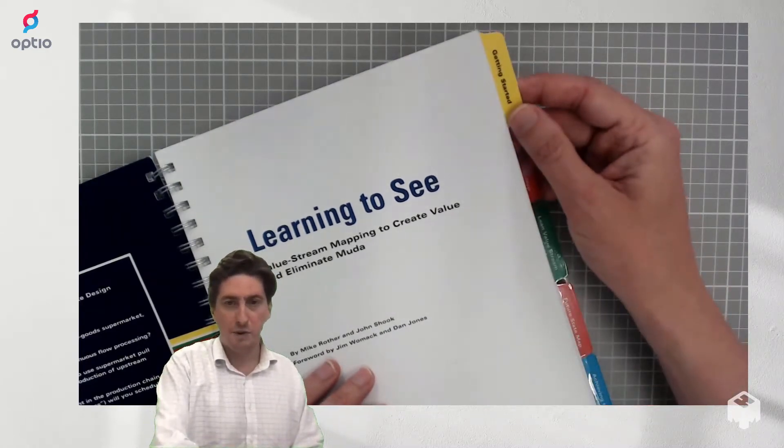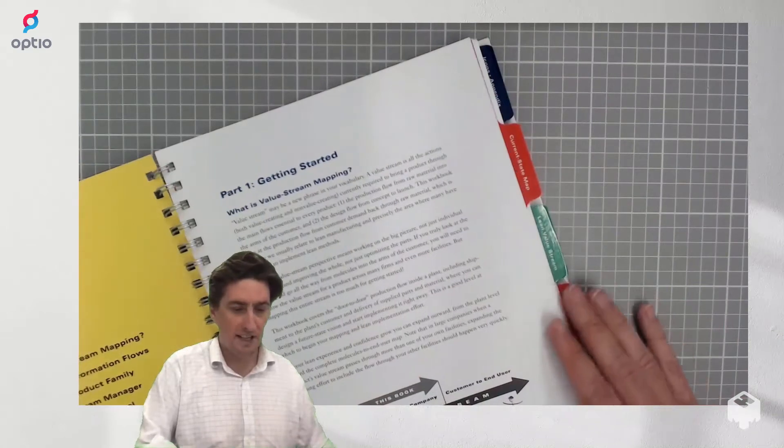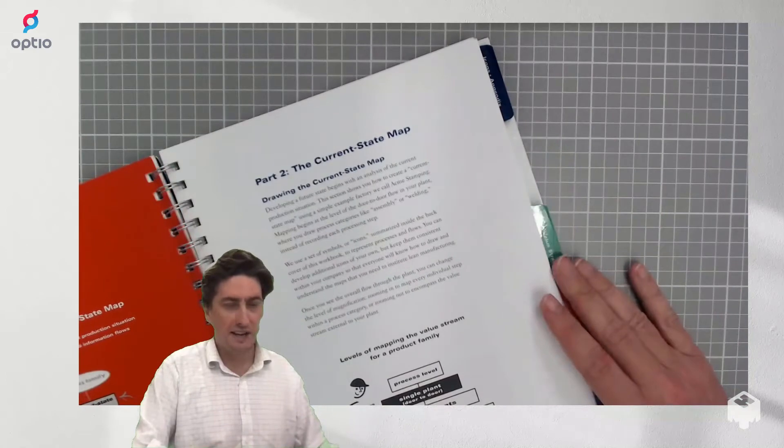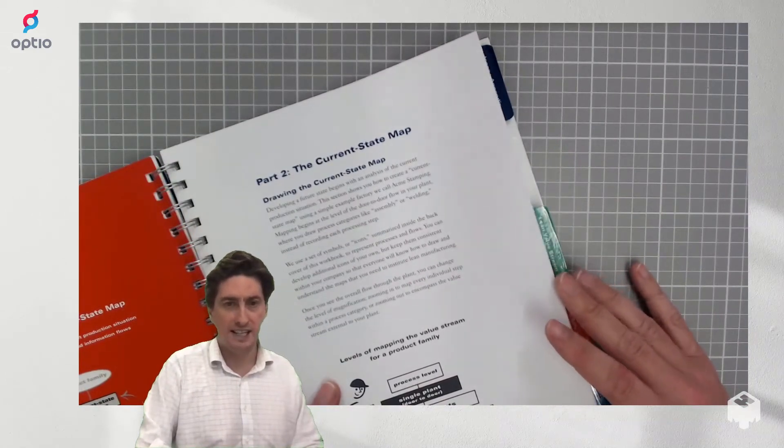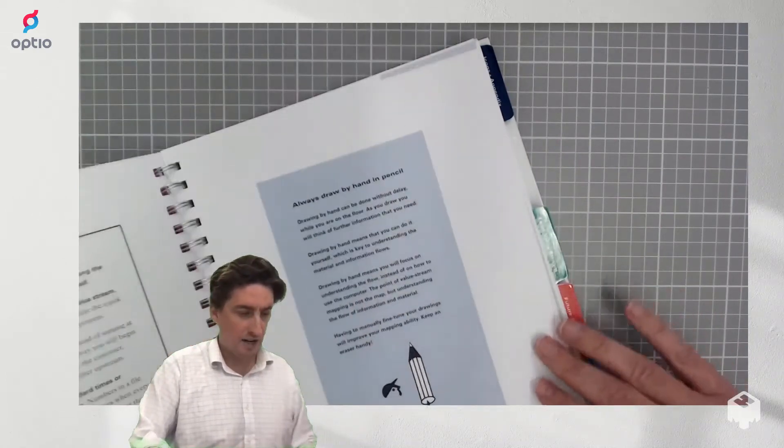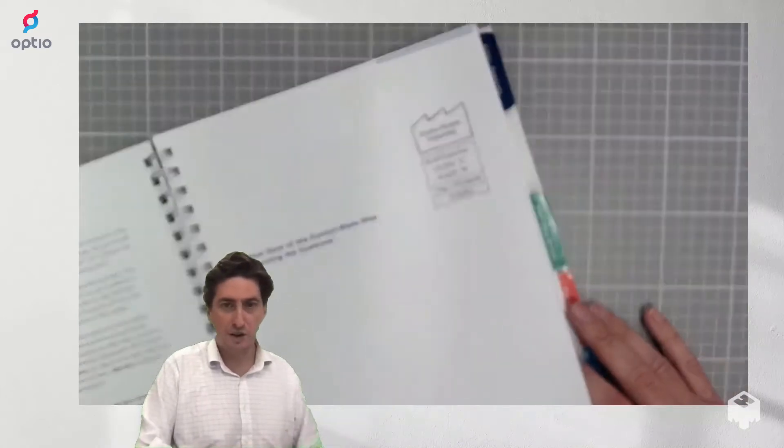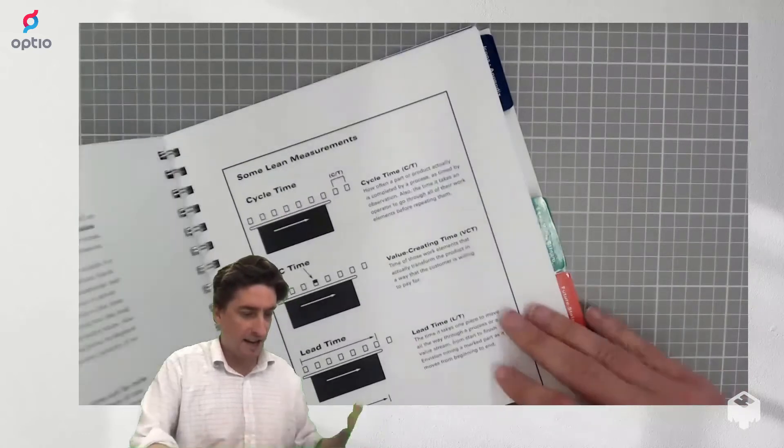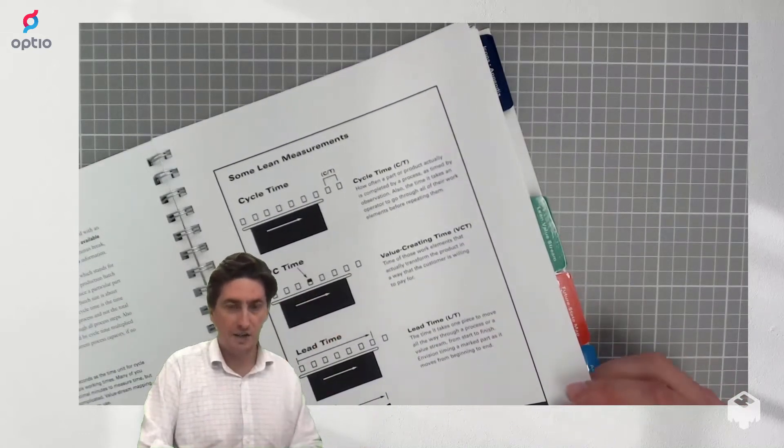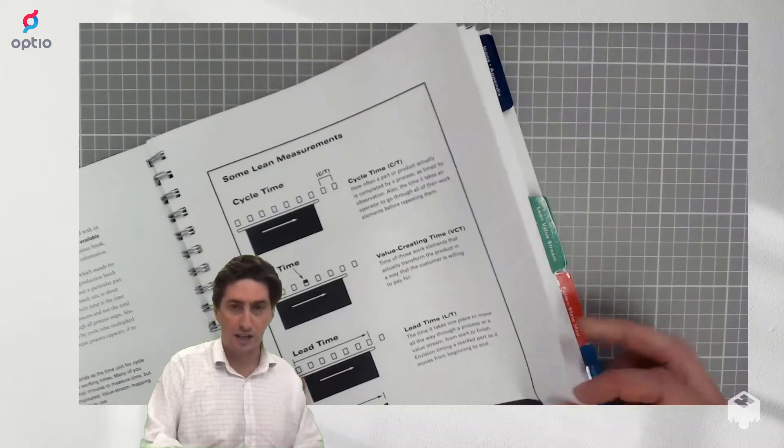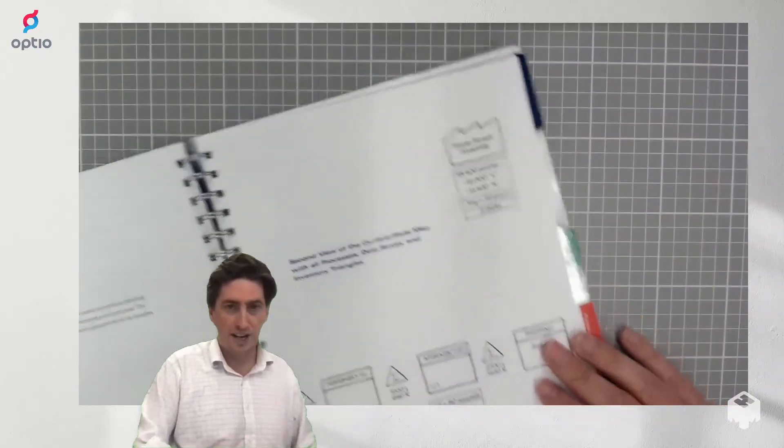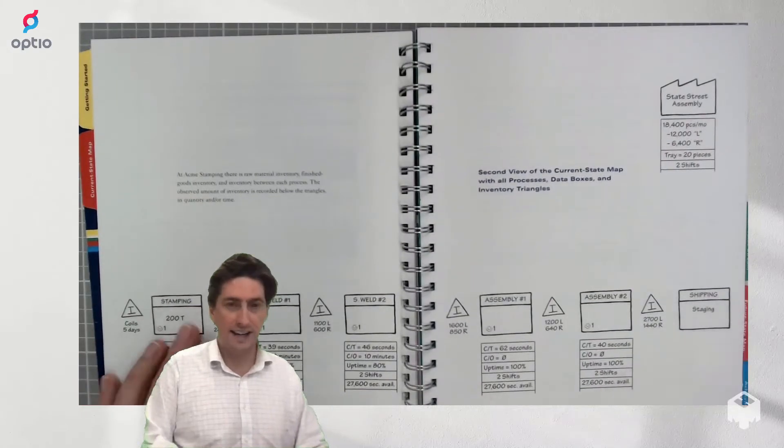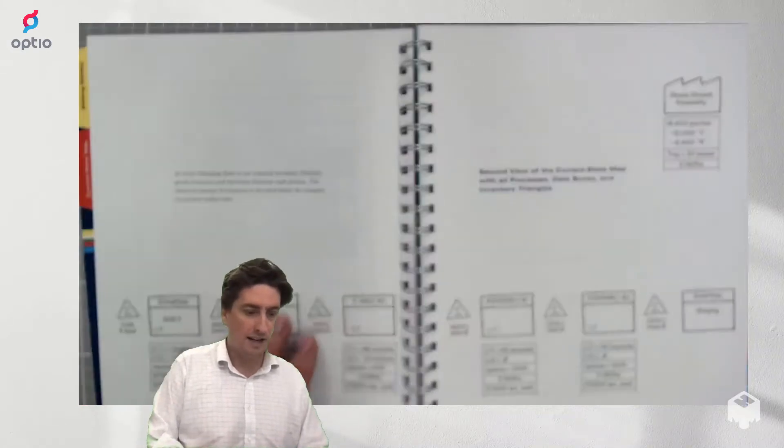The first part of the book is about what value stream mapping is and how it works and then it goes right away into creating the current state map of that ACME factory. It explains how to abstract your manufacturing process into individual cells and what relevant data you need to collect like cycle time or lead time, and then you can start drawing a value stream map where you look at your process as a sequence of actions like stamping, welding and assembly.